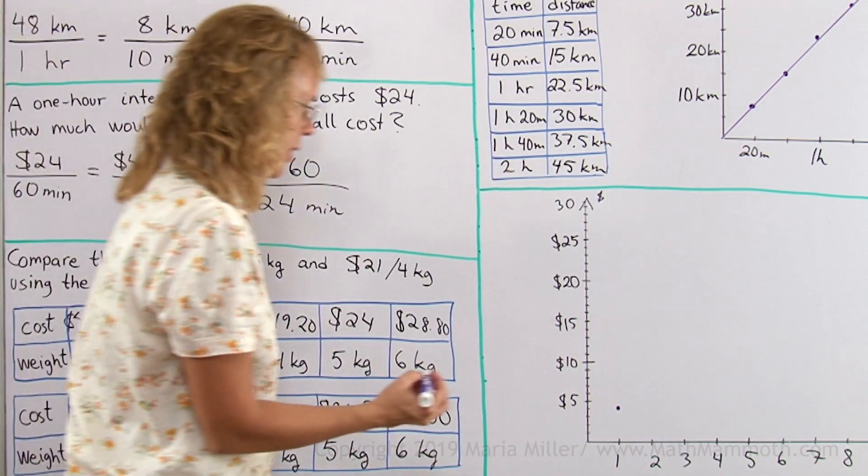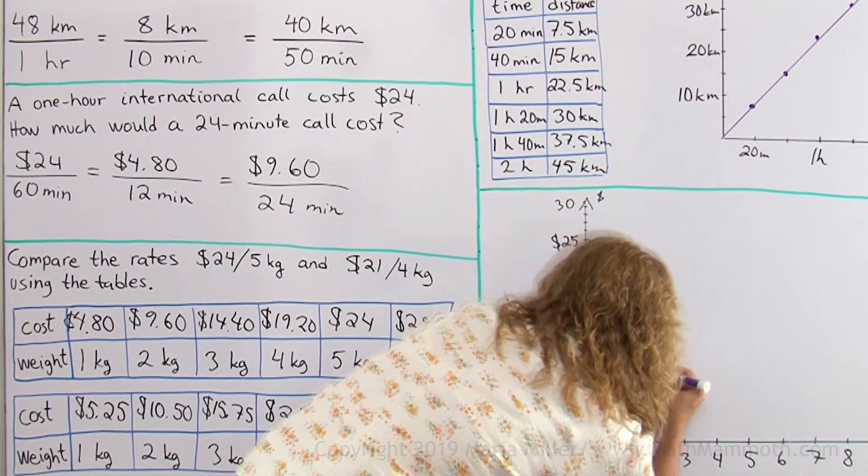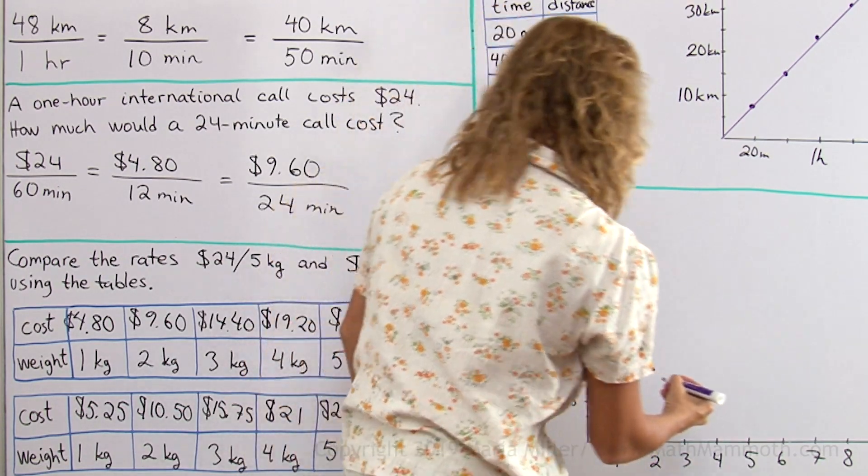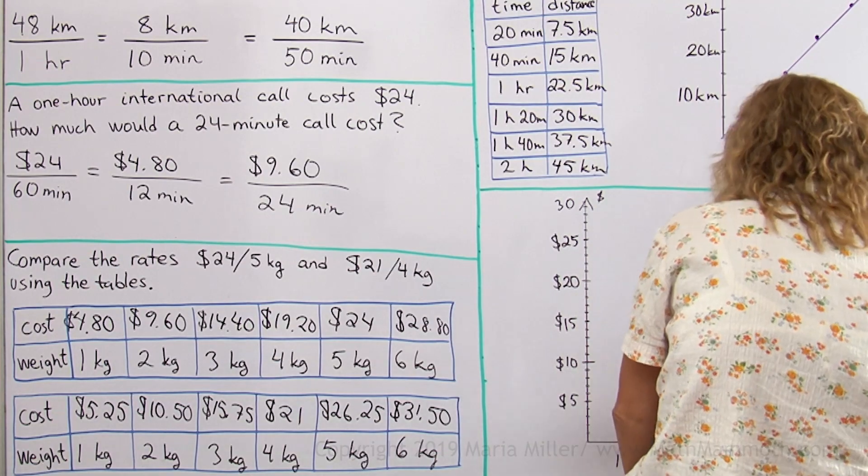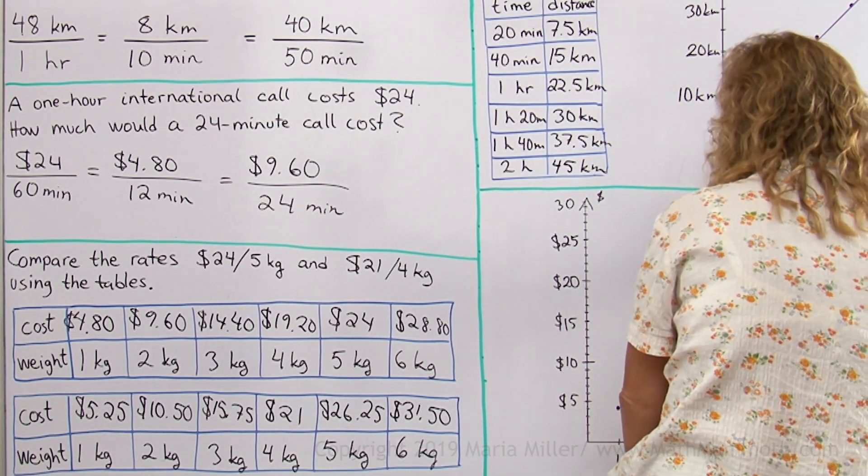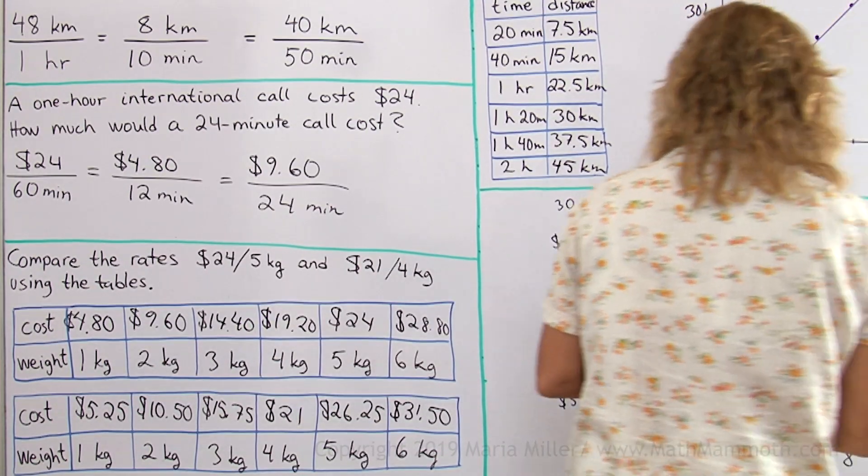Then 2 kilograms, 9.60. 3 kilograms, 14.40. 6 kilograms, 28.80.